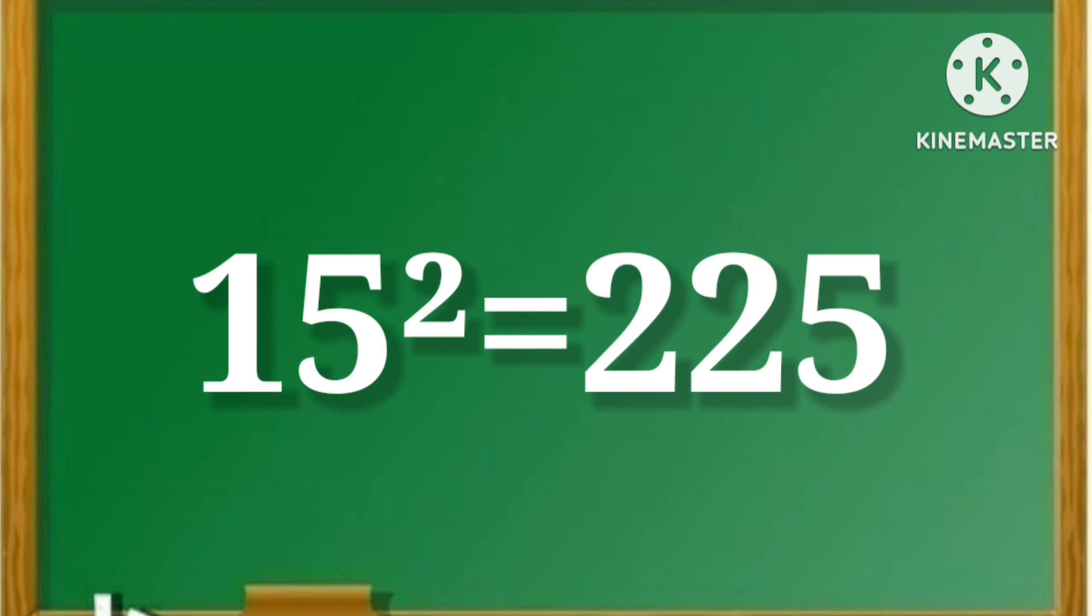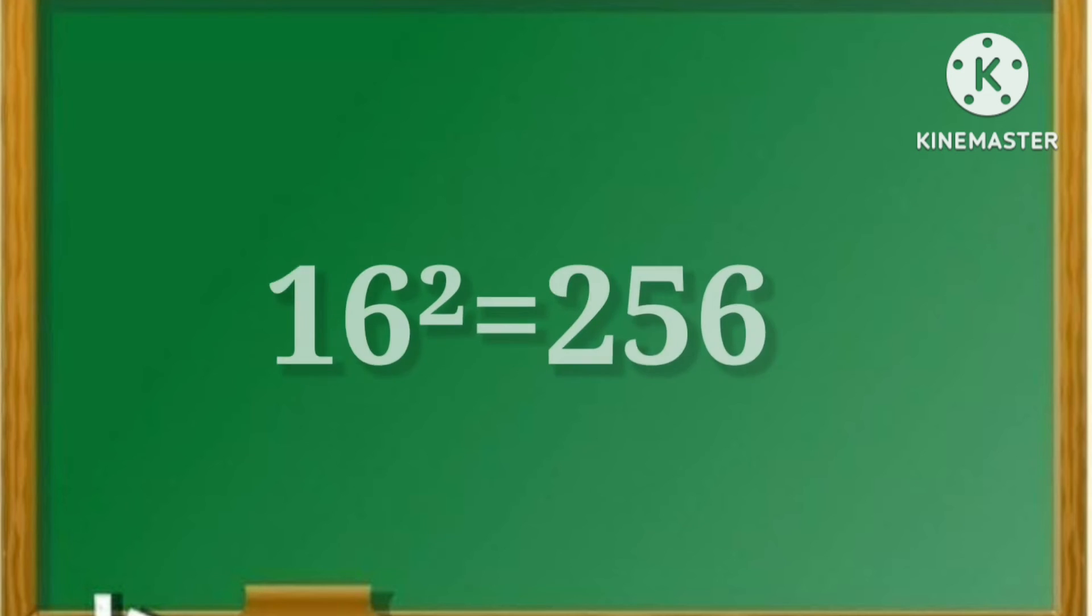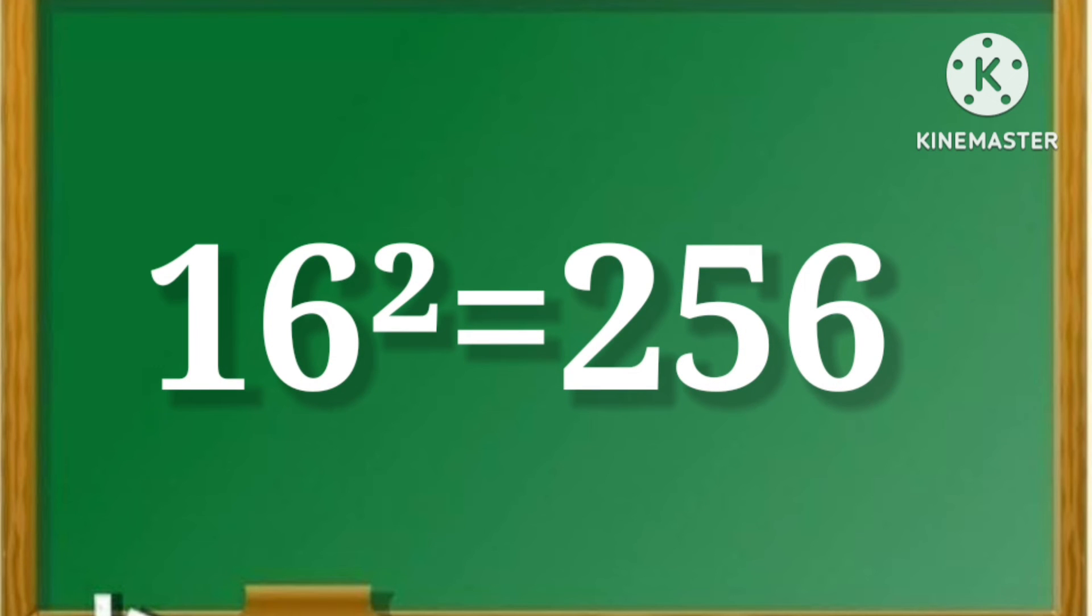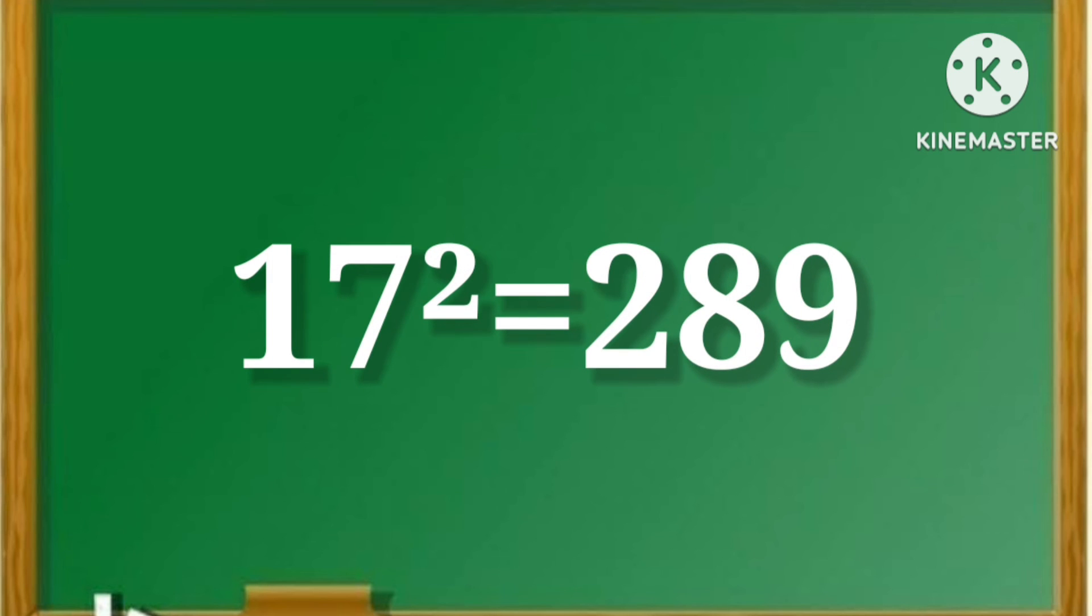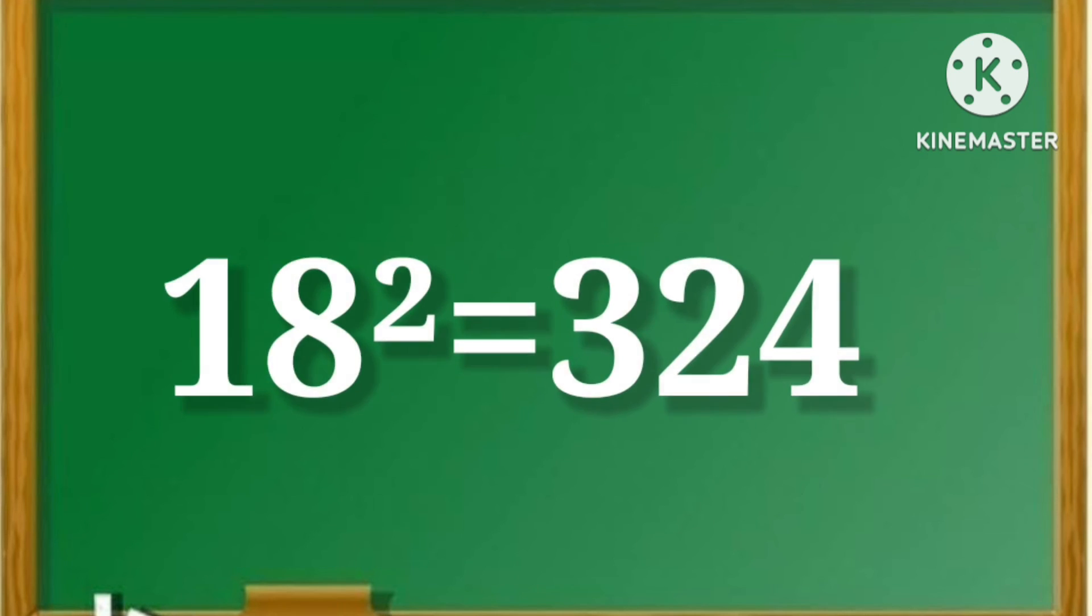15 square is equal to 225. 16 square is equal to 256. 17 square is equal to 289. 18 square is equal to 324.